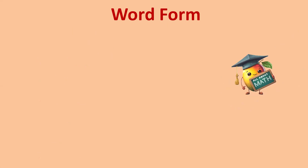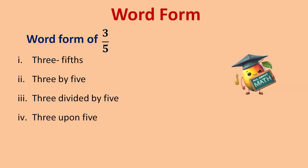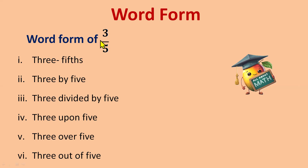Let's see the word form of three by five. The first form: we write three first and then the ordinal number, so five is written as 'fifths' — three fifths. The second way is three by five, three divided by five, three upon five, three over five, and three out of five. We write 'fifths' with 's' because three is used here.